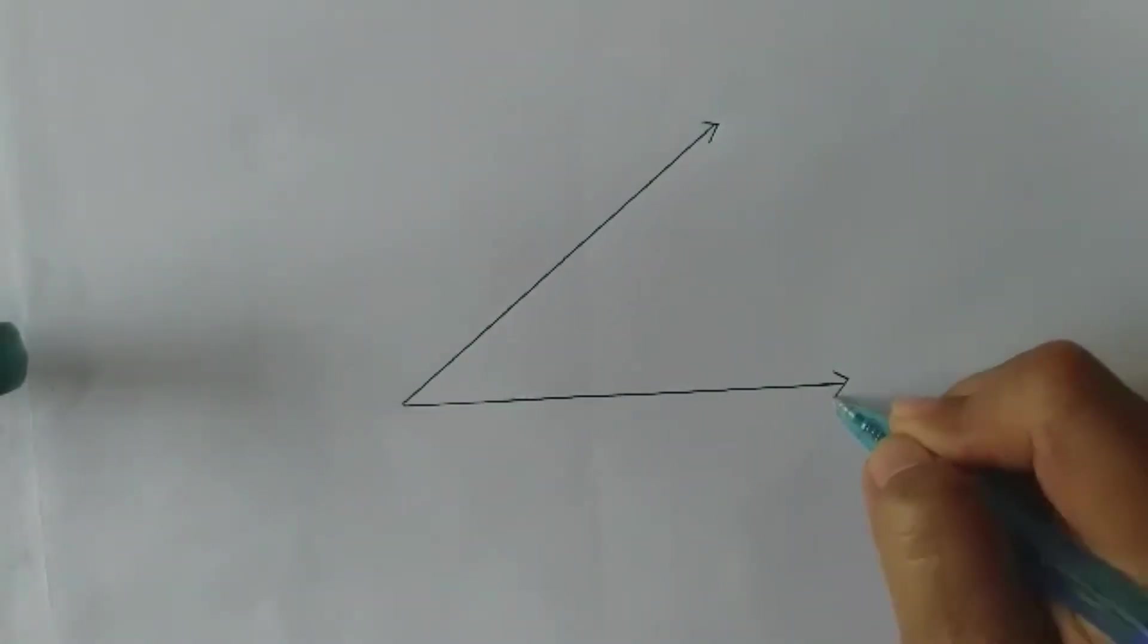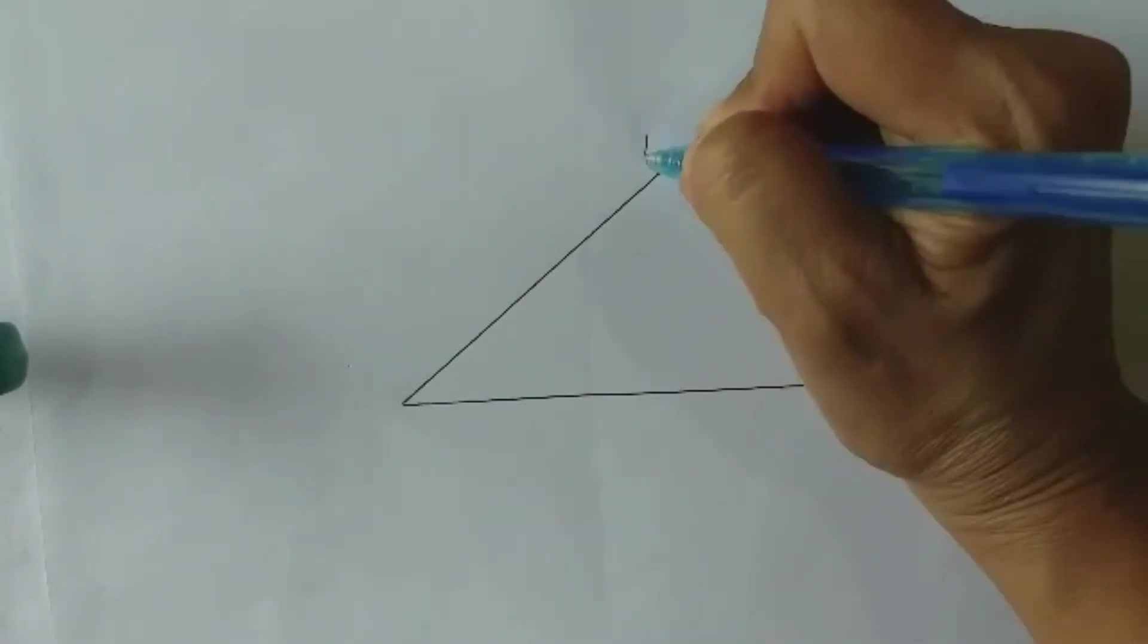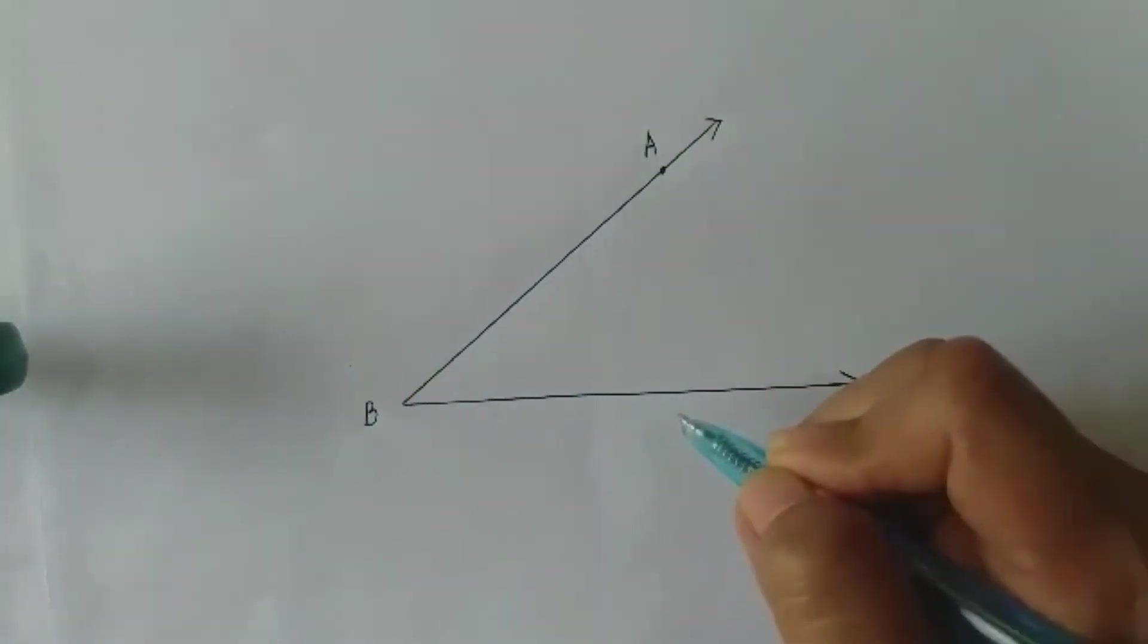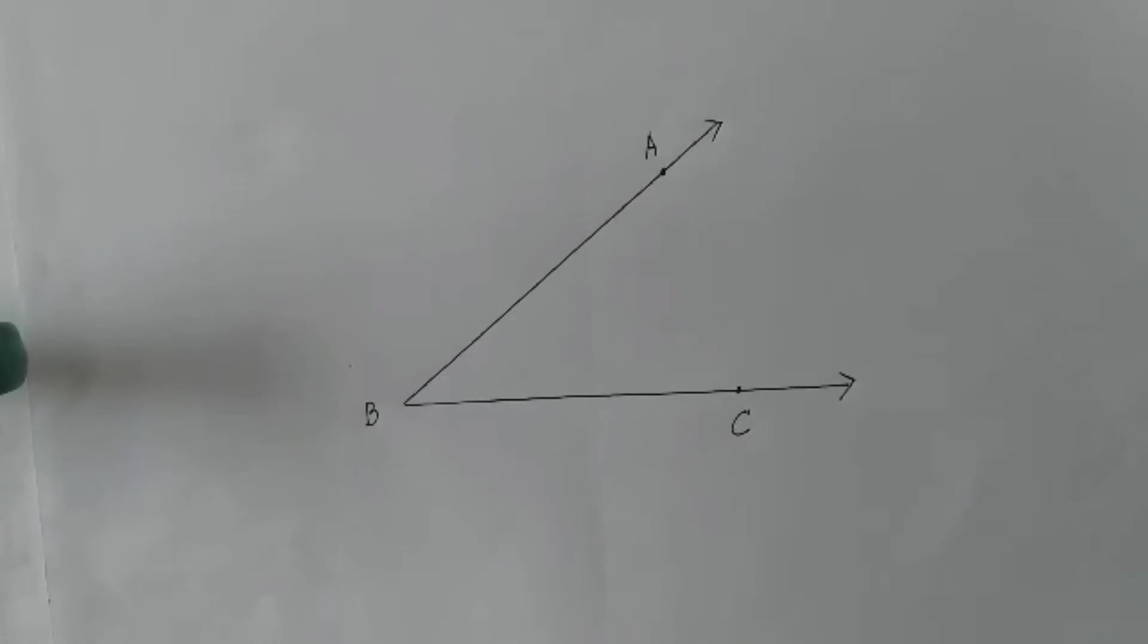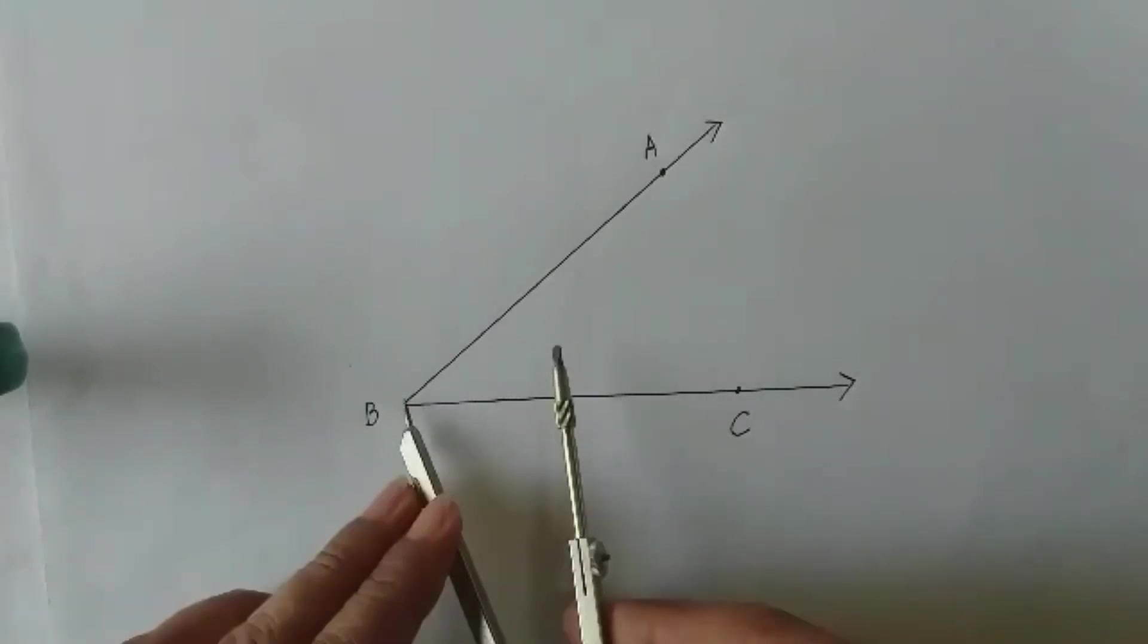When we talk of acute angle, it must be less than 90 degrees, so you can see it's somewhat slanted. And let us name our angle, angle ABC. So we located the points from the sides, two sides, and we have the vertex B.